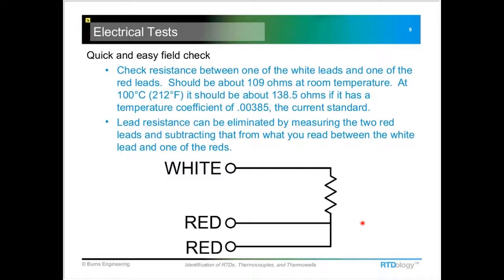And if we want to get a little more in-depth, we can go ahead and compensate manually for that lead resistance. We just take just a simple ohm meter, check between the two red leads and measure that resistance, and then subtract that from what you measure between the white and just one of the reds. And that will give you the resistance of just this sensing element right here. It's a little resistor made out of platinum wire, so that's what you're measuring and that's what you want to define.